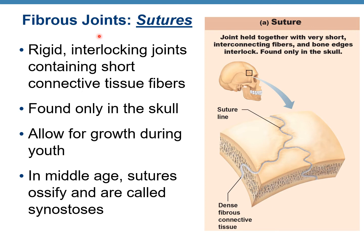Fibrous joints — sutures. Sutures are rigid, interlocking joints containing short connective tissue fibers. They are found only in the skull and are not movable — synarthrosis. They allow for growth during youth, and in middle age, sutures ossify and are then called synostosis.